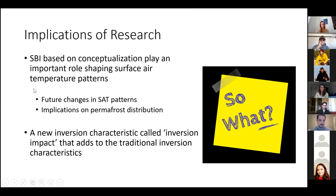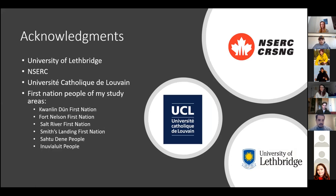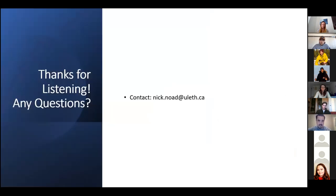The implications of this research: we conceptualized the impact of inversions on surface air temperatures and found significant impacts that can influence permafrost distribution. It's important to look at how these surface-based inversions and their influence may change with climate change. This new inversion impact variable is recommended for future research on surface-based inversions, particularly with respect to how they're influencing permafrost in areas. I'd like to acknowledge these groups for their support, as well as the First Nations groups on whose traditional territory the radiosonde sensors are released from, and also my co-authors and all the work they put in. Thanks for listening — if there are any questions, here's my email.